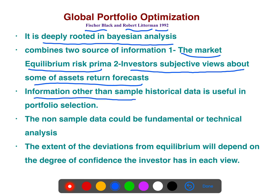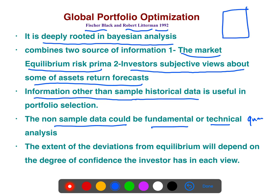Information other than sample covariance and sample historical data is useful. The non-sample data could be fundamental, technical, quantitative, machine learning — anything. There is an integration, and that is Black-Litterman: an integration framework where you have different signals.